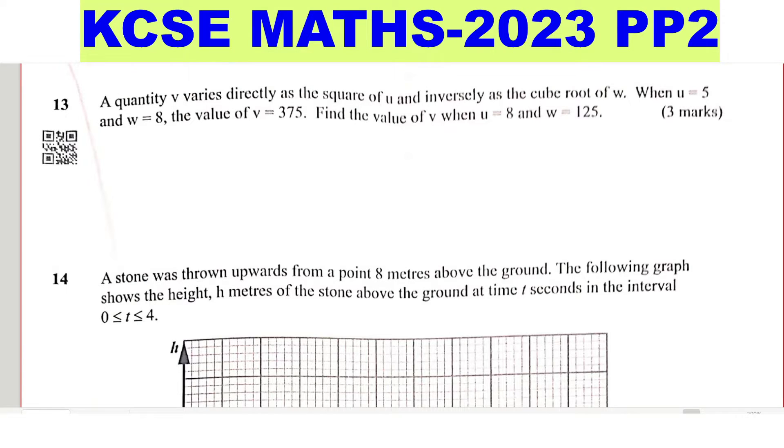Question 13, a quantity V varies directly as the square of U and inversely as the cube root of W. When U equals 5 and W equals 8, the value of V equals 375. Find the value of V when U equals 8 and W equals 125.